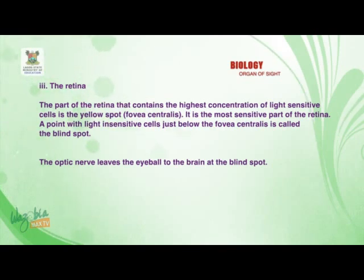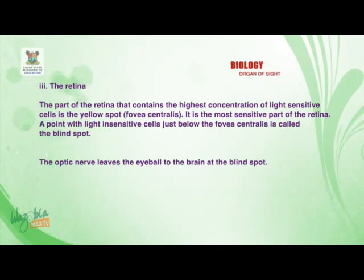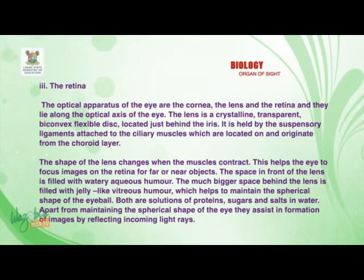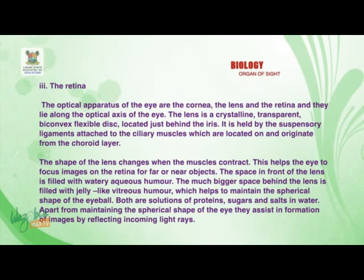A point with no light-sensitive cells just below the fovea centralis is called the blind spot. The optic nerve leaves the eyeball to the brain at the blind spot. The optical apparatus of the eye — the cornea, the lens, and the retina — lie along the optical axis of the eye.